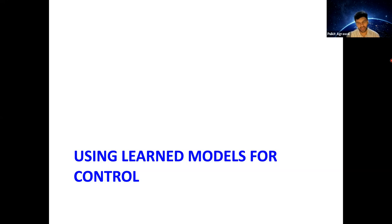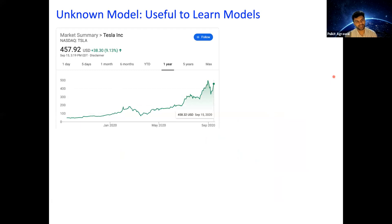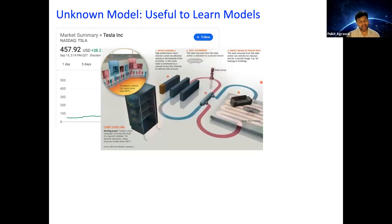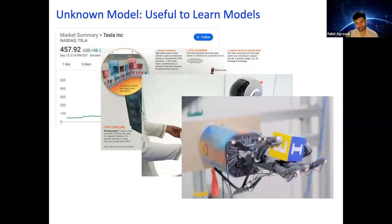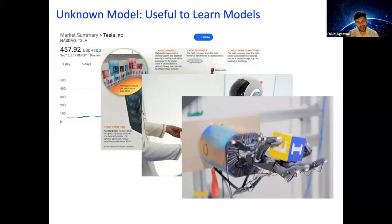We talked about a physics problem, but there are many other problems where models are unknown. For example, if I'm looking at the stock market, we don't have a good analytical model of how stocks are going to behave. Many times if I have an industrial plant, we don't have a precise model. Or in human-robot interaction and manipulation, the model ends up being unknown. Or even if it is known, it can be computationally very expensive to simulate, or it runs into the interface problem we discussed. So how do we operate in these scenarios?